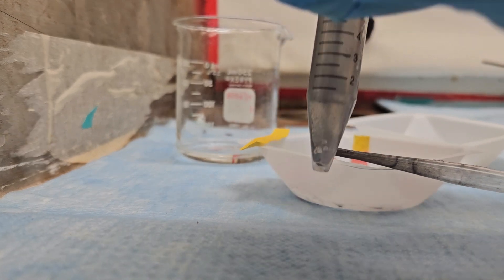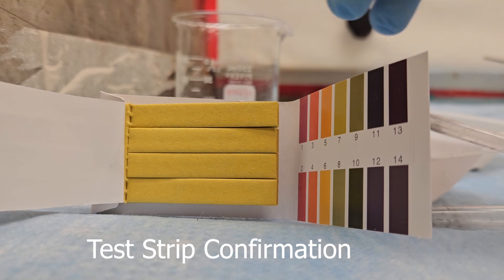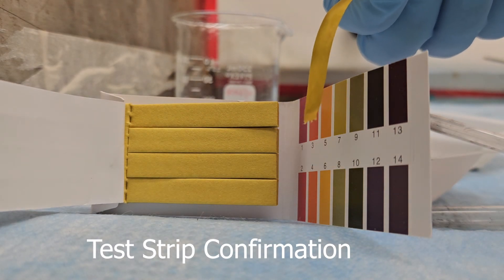After washing three to four times, test the pH level of the supernatant, and ensure that its pH is between 6 and 7, as seen here.